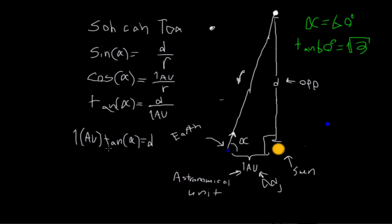So let's plug this in. 1 times the tangent of alpha, this is just a unit, is equal to D. So D is equal to 1AU times the tangent of alpha. And if alpha is 60, we know that the tangent of alpha is the square root of 3 times the square root of 3. And that is our D.